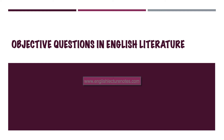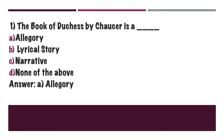First question: The Book of Duchess by Chaucer is a — A. Allegory, B. Lyrical Story, C. Narrator, D. None of the above. The right answer is Option A: Allegory.